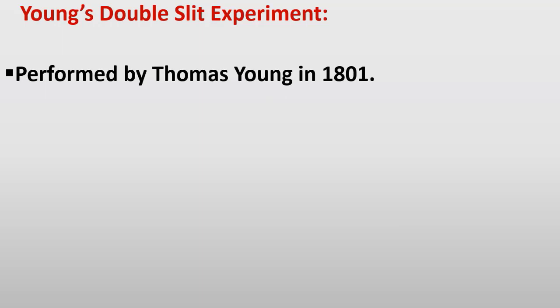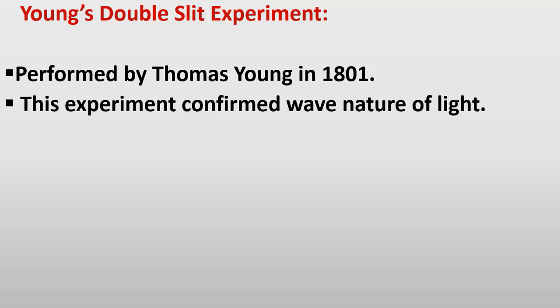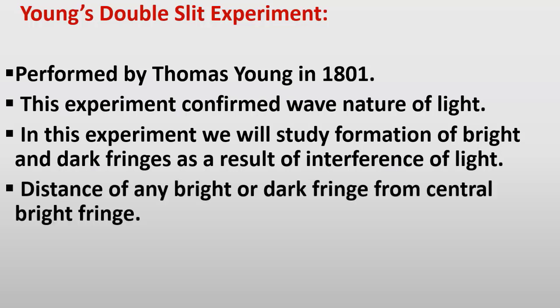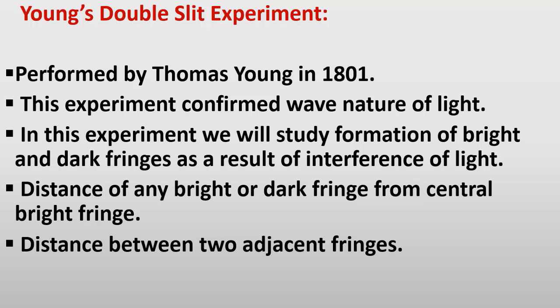Ab hum Young's Double Slit Experiment parhenге. Performed by Thomas Young in 1801. This experiment confirmed the wave nature of light. In this experiment we will study the formation of bright and dark fringes as a result of interference of light. We will also calculate the formula for the distance of any bright or dark fringe from the central bright fringe, and the distance between two adjacent consecutive bright or dark fringes.